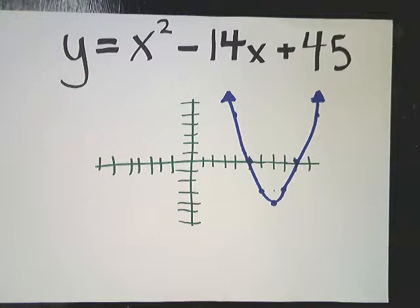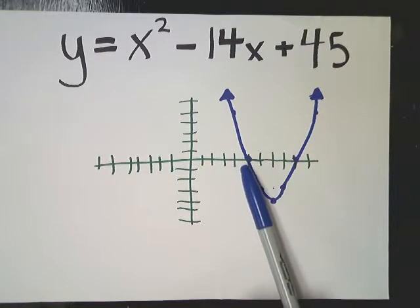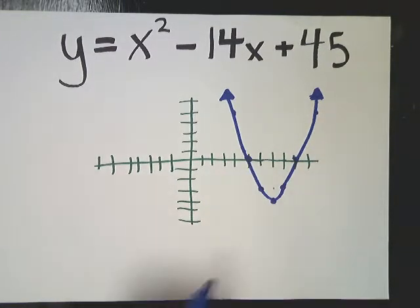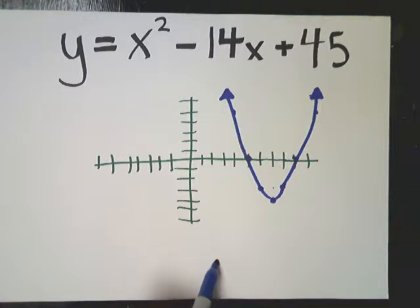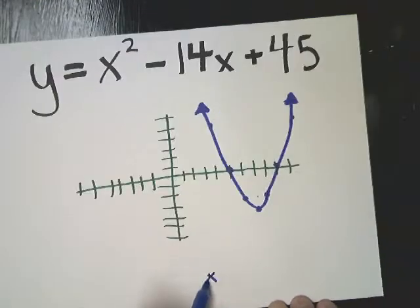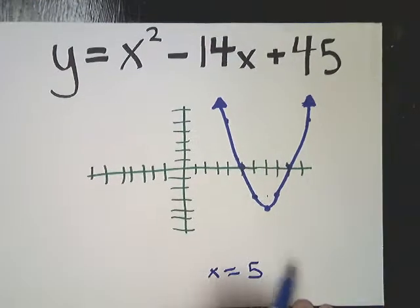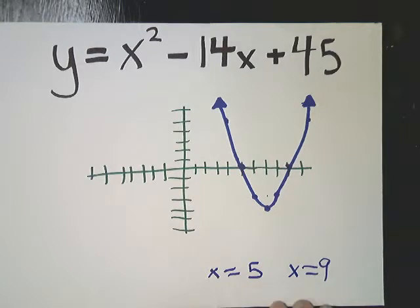When I say solutions here, I mean if I graph it, where does it hit right on the x-axis? So when y is equal to zero. Essentially, anywhere on this line that it hits, those are the solutions. So you can see in this one, it's here and here. So at positive five,